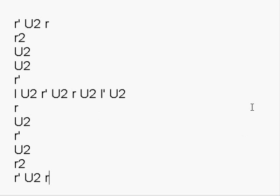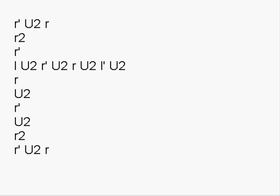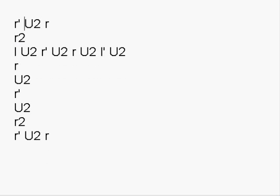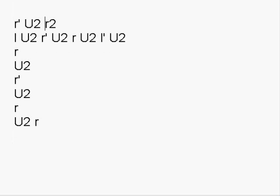Adding those moves in, this is the algorithm in its entirety. As you can see, it's a lot of moves and we can start doing some cancellations. This U2 and U2 go. This R prime and this R will go. And this R2 and R prime will just become R. Leaving us with the following result.